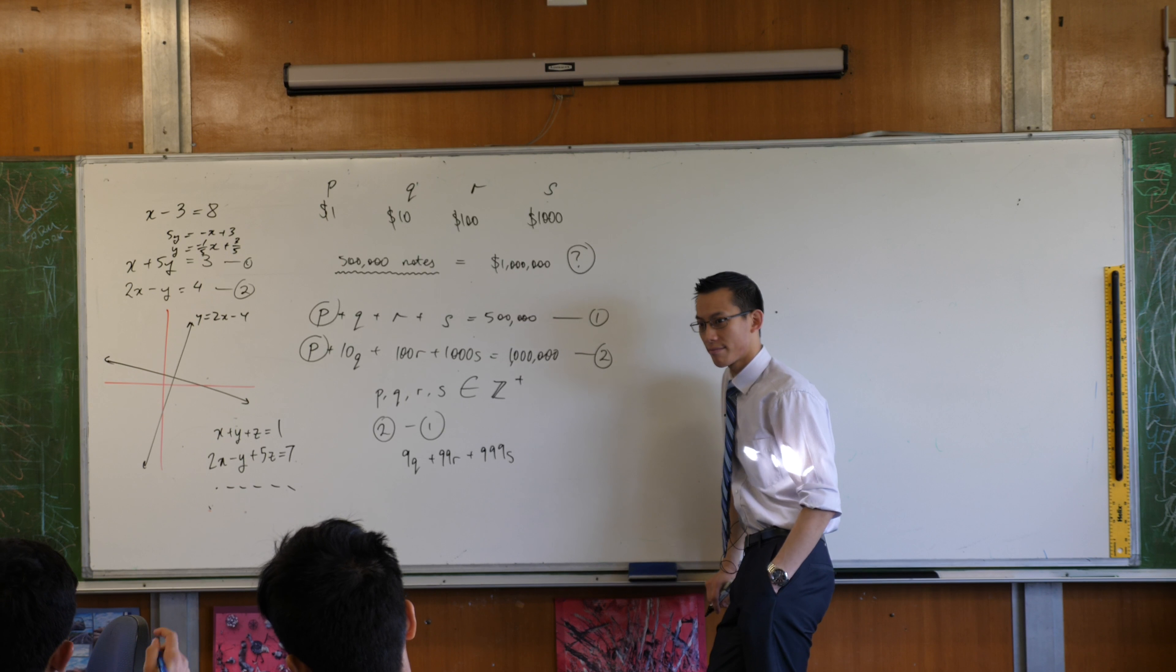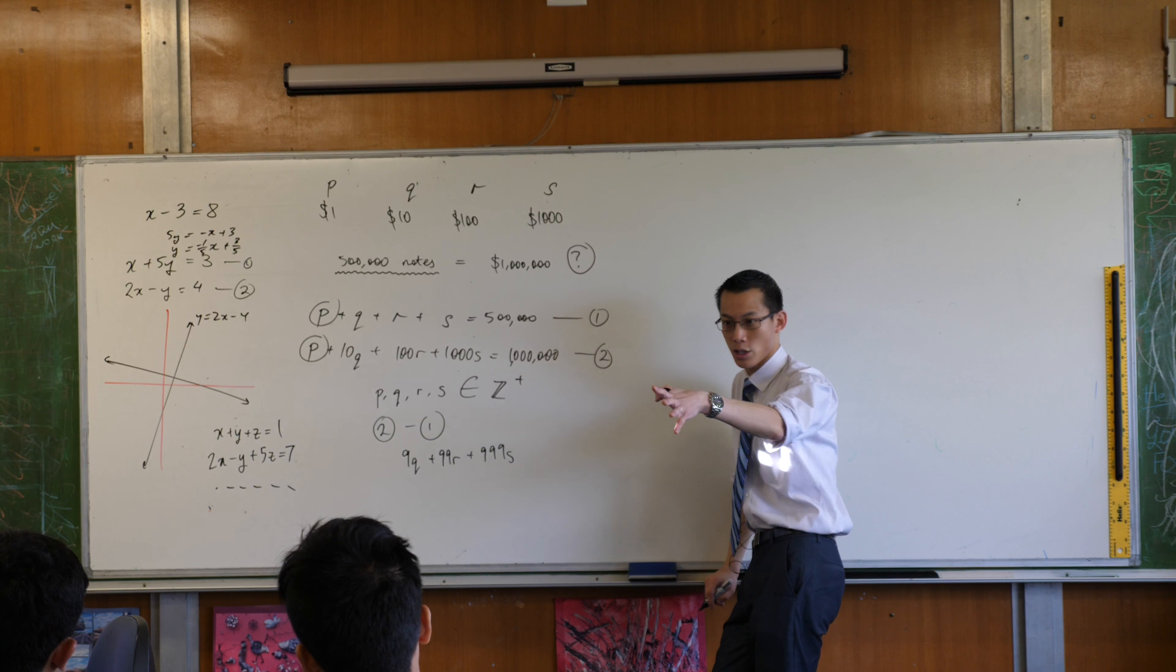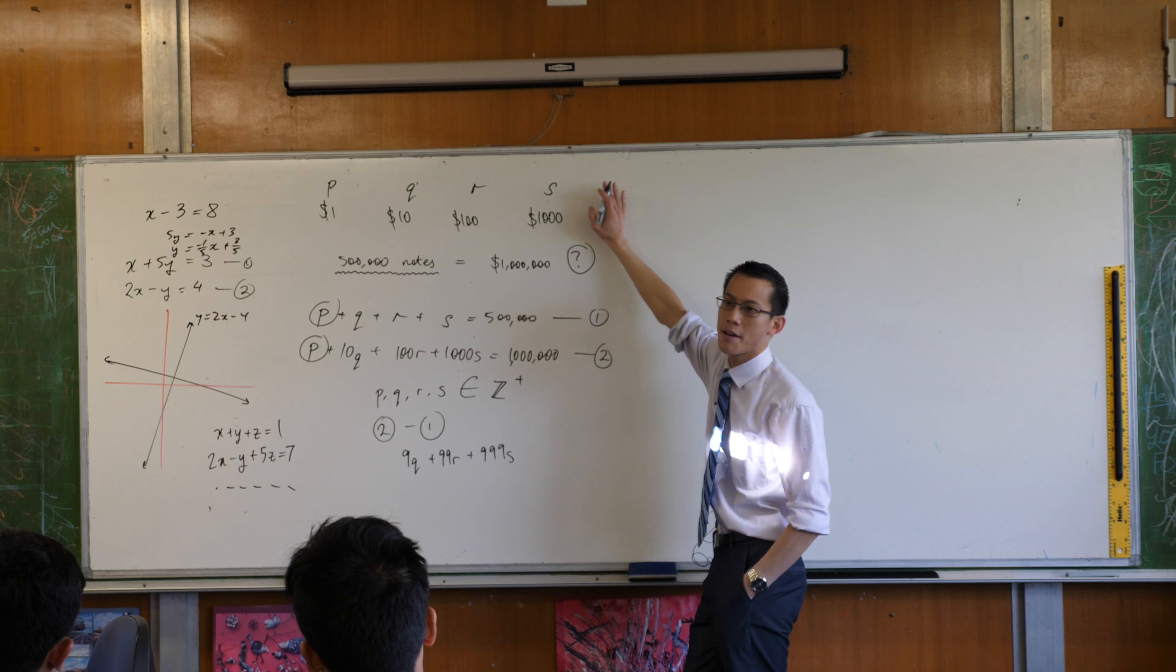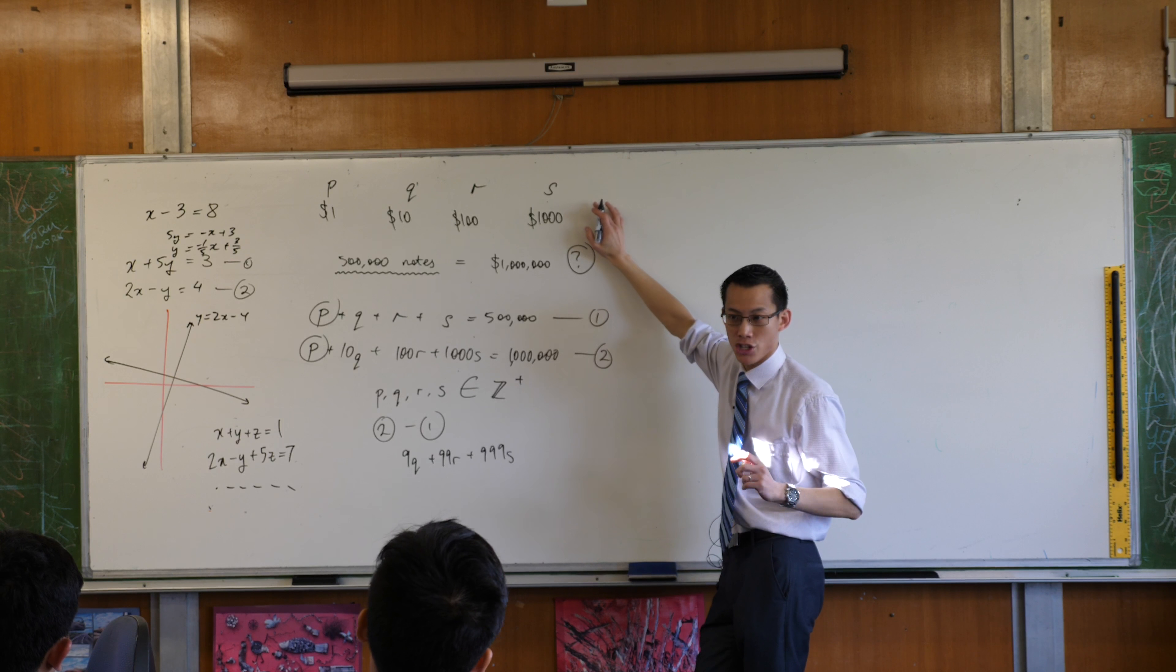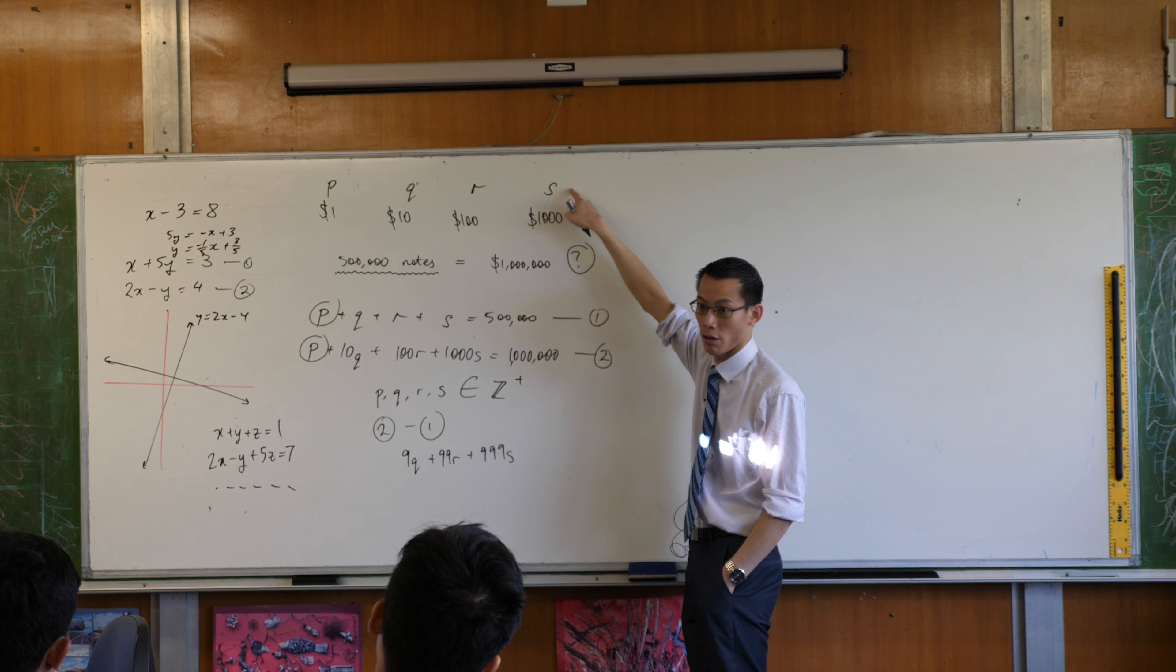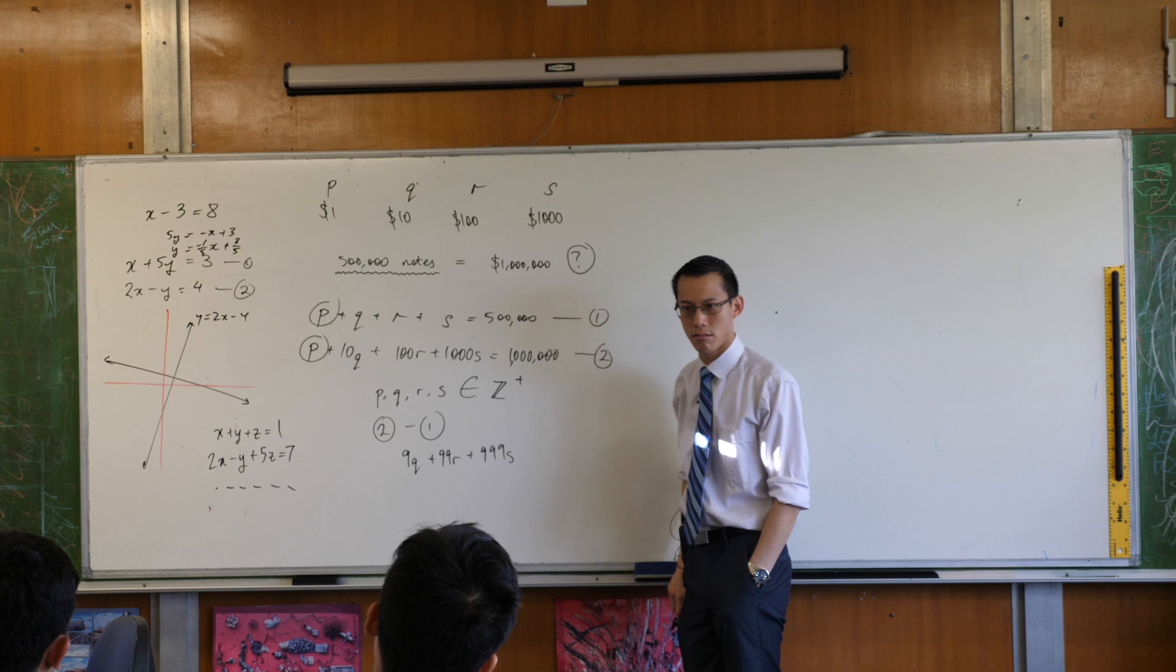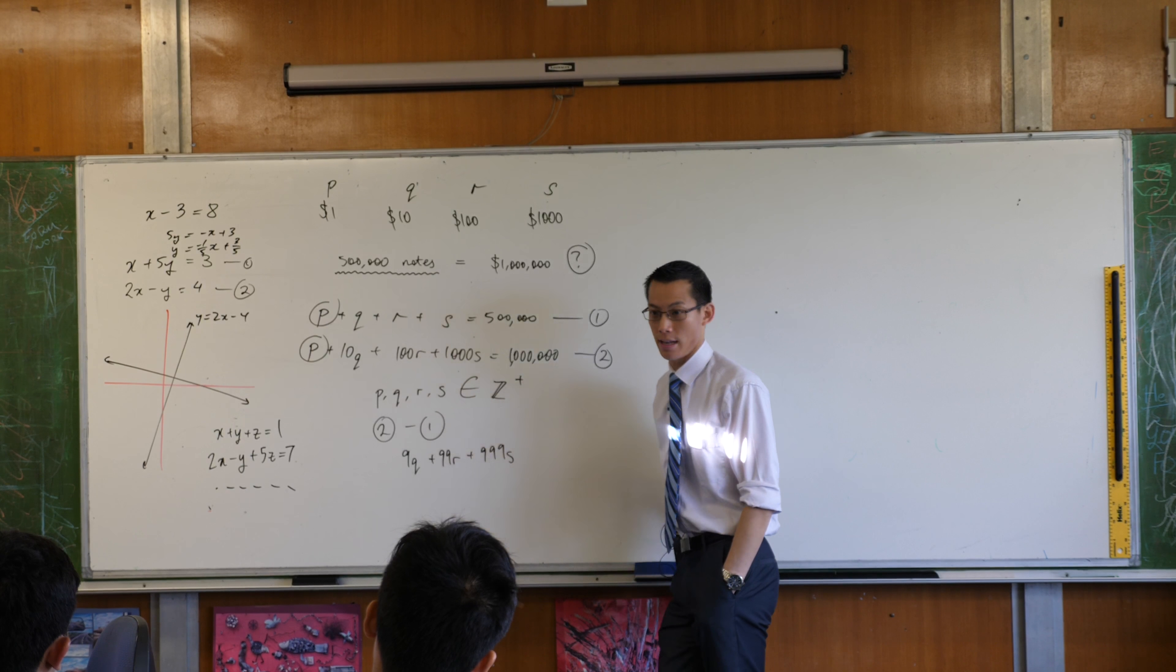I just didn't understand how, because is there a thousand S already a million? So that's a good question. This comes back to what are P, Q, R, and S? I admit I didn't write it. So P, Q, R, and S are how many of each note do you have? So for example, I might have a single thousand dollar note. So a thousand S would be a thousand. Or I might have seventeen thousand dollar notes, in which case a thousand S would be seventeen thousand.